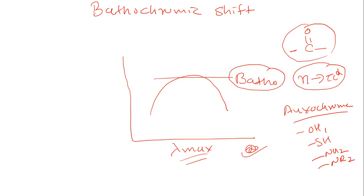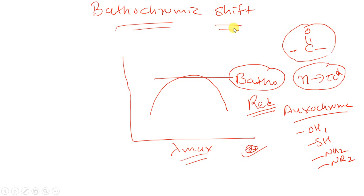Bathochromic shift is also known as red shift. If an exam asks about red shift, you explain it as the bathochromic shift. When we have N to Pi Star transition for the carbonyl compound, it experiences the bathochromic shift when the polarity of the solvent is decreased. Groups such as OH, SH, NH2, NR2 — when present as oxochromic groups — cause bathochromic shift.